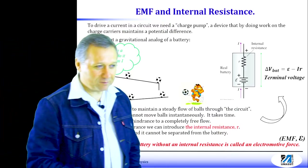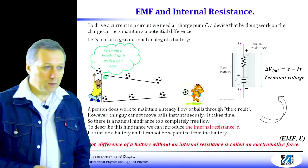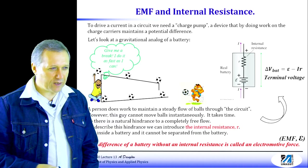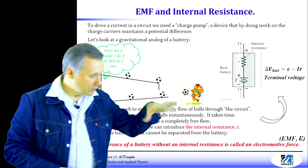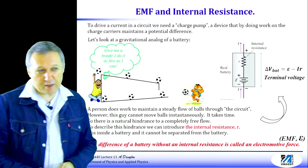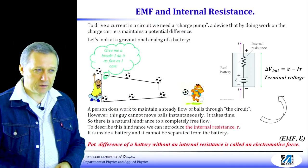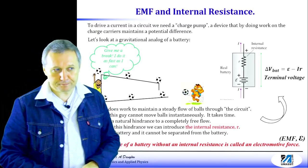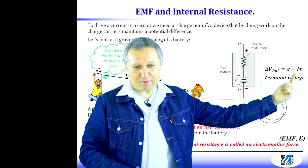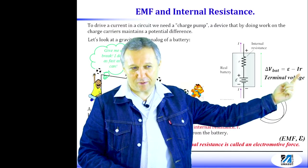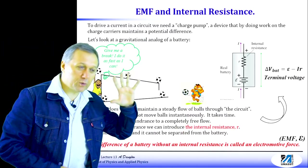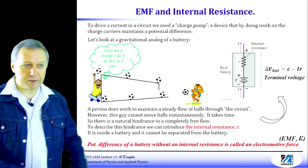For example, I remember using a nine-volt battery, and when it was connected to a device and I measured it, it showed about 8.7 to 8.8 volts instead of nine volts. That 0.2-volt difference came from the I times r term — the voltage drop across the internal resistance. Now we know what EMF is, and we're ready to move to Kirchhoff rules.